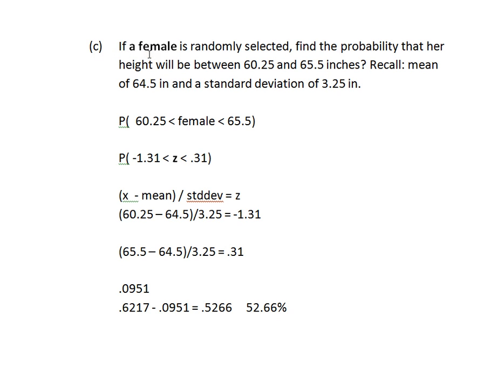Number C says if a female, just one female, and that's important, if a single female is randomly selected, find the probability that her height is between 60.25 and 65.5 inches. Again, we know our female heights are normally distributed with a mean of 64.5 and a standard deviation of 3.25. So what this problem is really asking here is what is the percentage or the probability or the area under the curve for a female to be between 60.25 and 65.5 inches? What's the chance of that happening? What are the percentages of females that occur in that range?